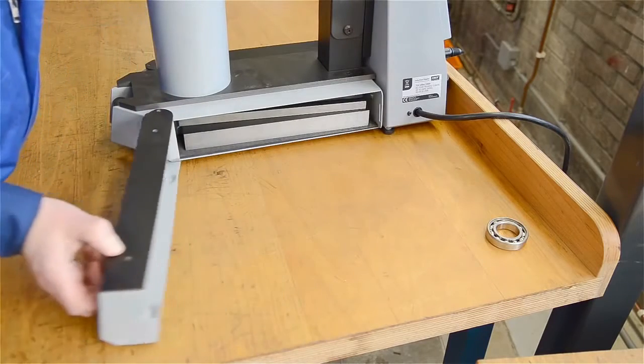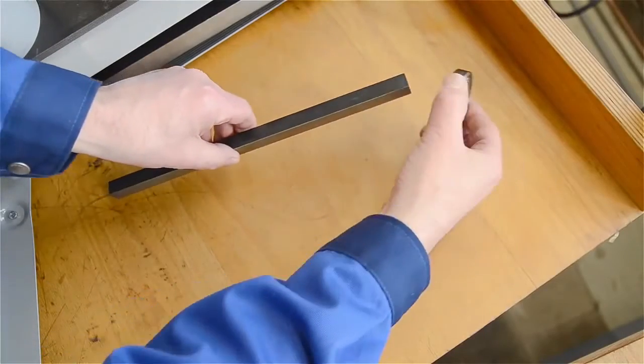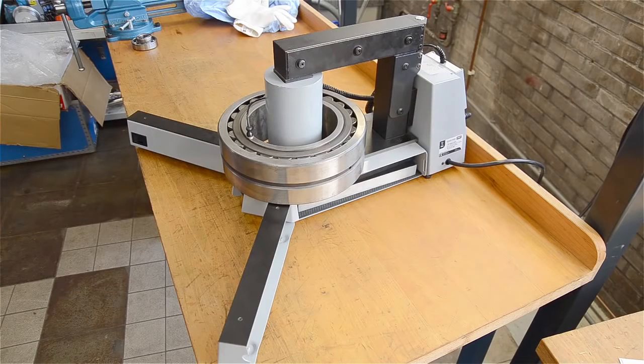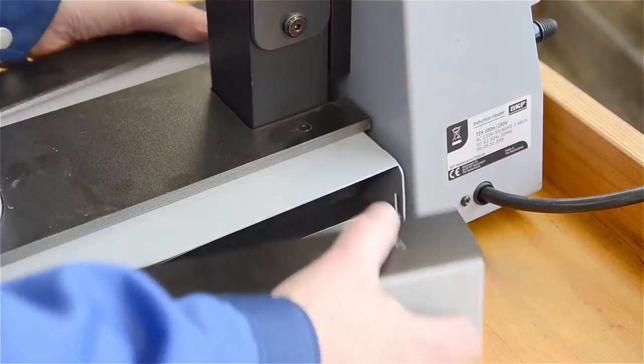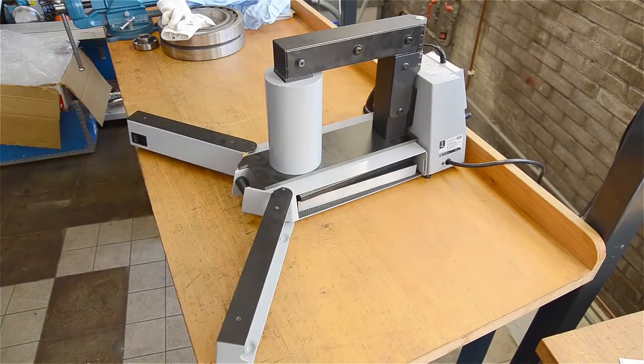Choose the appropriate yoke for the bearing to be heated and place the bearing on the yoke. Better still, if there is space around the coil, place the bearing here for even higher efficiency. SKF heaters have built-in adjustable support legs to make this option really easy.